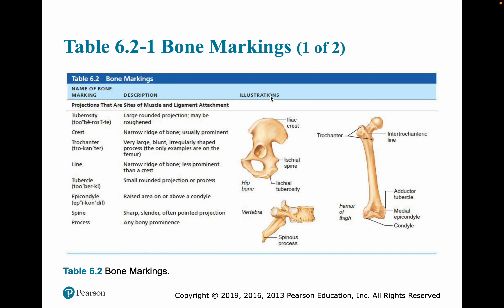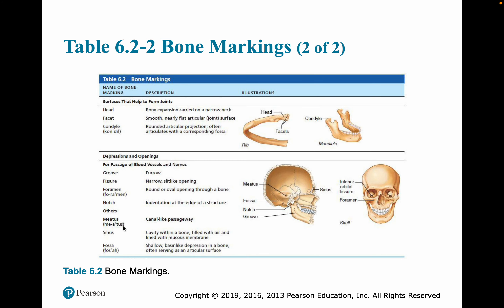This image is in your book, figure 6.2. Examples of projections include tuberosities, crests, trochanters, lines, tubercles, epicondyles, spines, and processes. Some of these will be important as we go through each individual bone in the next couple of chapters. We also have heads, facets, condyles, grooves, fissures, and foramina.